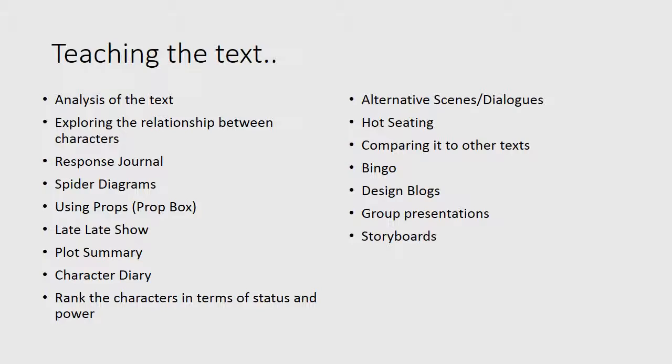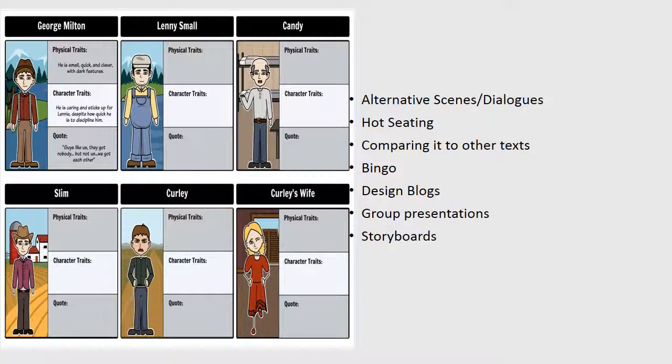In teaching the text, students will obviously do a close reading analysis and explore relationships between the different characters. There are also a number of active and creative teaching methods that can be used effectively, for example: response journals to record students' responses throughout the novel; spider diagrams to chart relationships or themes; using props; the Late Late Show format to interview certain characters; plot summaries; character diaries — especially good for minor characters like Curly or Crooks; ranking characters in terms of status and power; designing alternative scenes and dialogues to encourage students to become writers; hot seating; comparing to other texts on the syllabus; Bingo — where students match quotations to characters; group presentations, which tie into key skills of working with others; and storyboards which students can design themselves. All of which can actively engage students with the text.